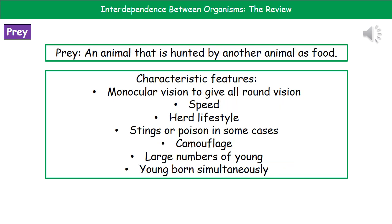Now turning to the prey — remember, prey is an animal that is hunted by another animal as food, so prey will never be a plant. Prey also have characteristic features. They've got monocular vision, meaning their eyes are on the side of their head to give them better all-round vision. They need to be quick to escape should a predator appear. They also have a herd lifestyle, tending to stand around in large groups, which makes them less likely to be picked off by a predator.